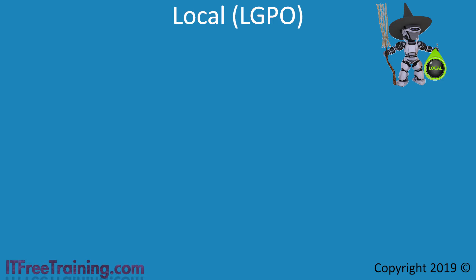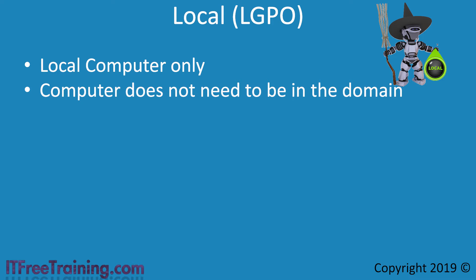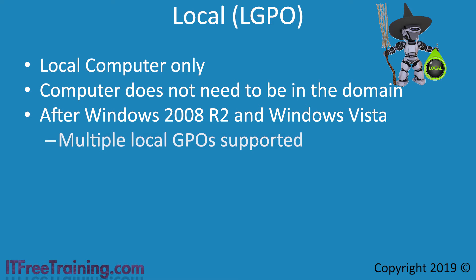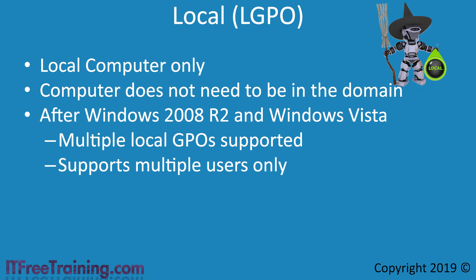Local Group Policy applies only to the local computer. The advantage of local group policy is that the computer does not need to be in the domain. This means there is no central control, so the administrator will need to visit each computer in order to apply group policy. To make the process easier, once a computer has been configured, the administrator can export the group policy and import it on another computer. After Windows Server 2008 R2 and Windows Vista, multiple local group policies are supported. However, the additional group policies can be applied only to users. It is not possible to create multiple local group policies for the same computer.